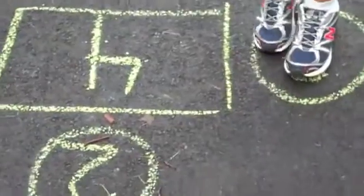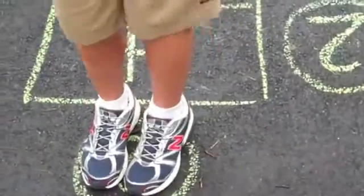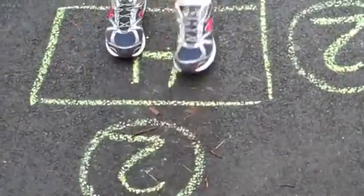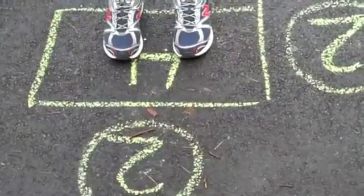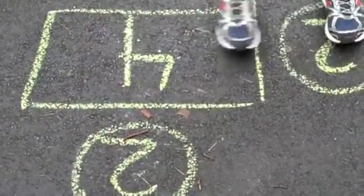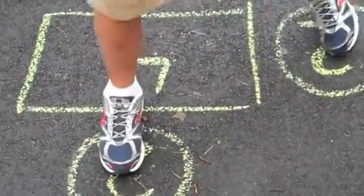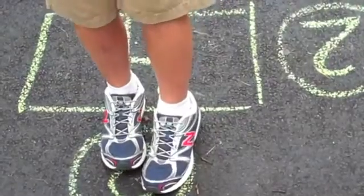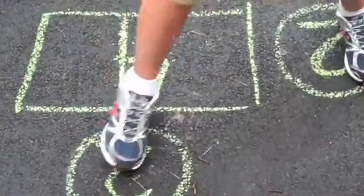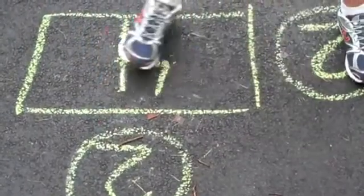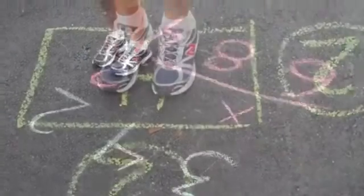Last one. Two times two equals four. Four divided by two equals two. Two times two equals four. Great.